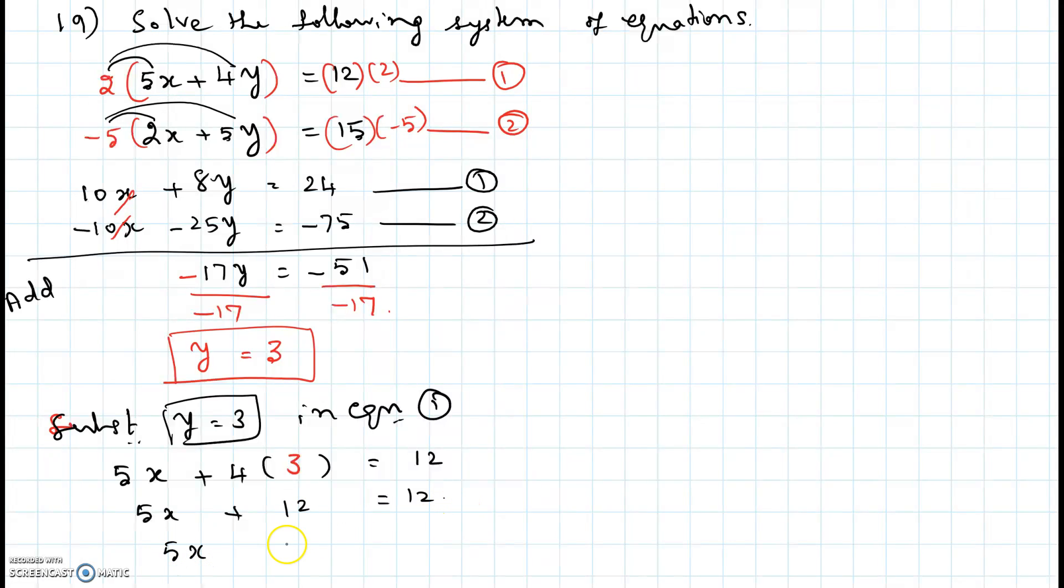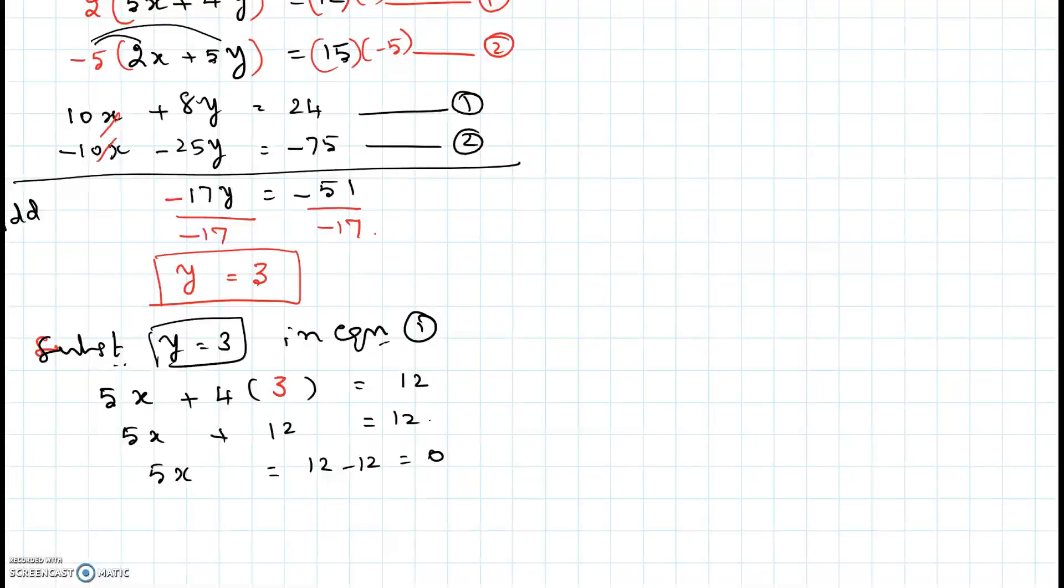5x plus 12 equal to 12. If you move the 12 to the other side it becomes minus 12, so that makes the right hand side 0. Now if I divide both sides by 5 you get x equal to 0.